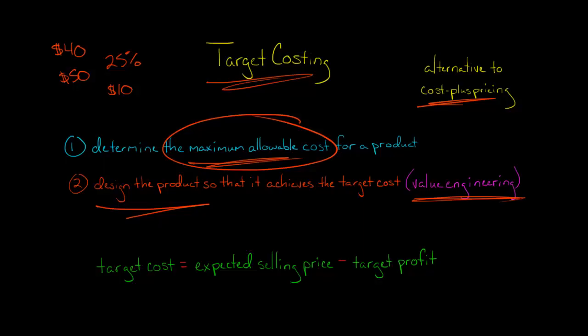For example, let's say that we said the expected selling price of our product is going to be $60. We're going to sell it for $60 a unit, and our target profit is $15 on every unit that we sell. Then our target cost would be $45 a unit. In other words, we are going to design this product in such a way that it does not cost more than $45 a unit to make. If it goes more than $45, then we are not going to achieve our target profit.